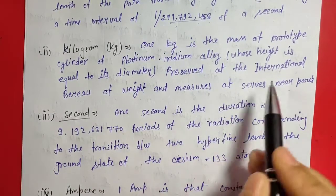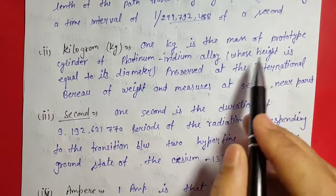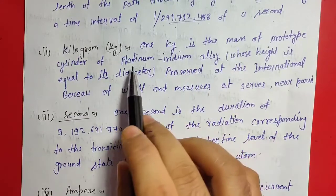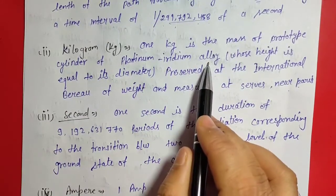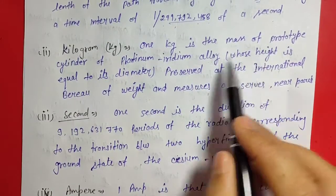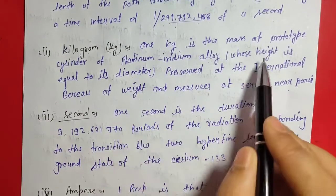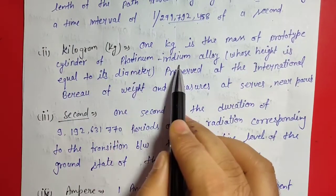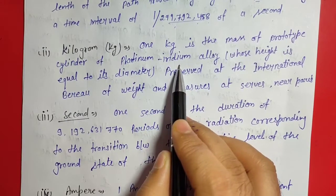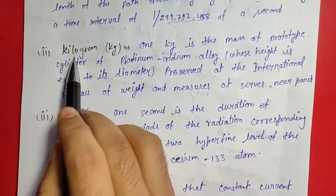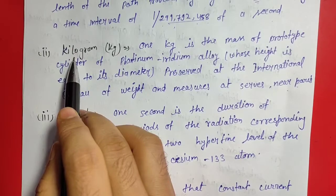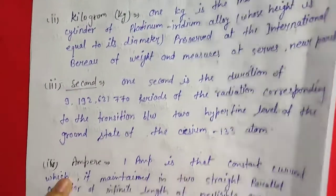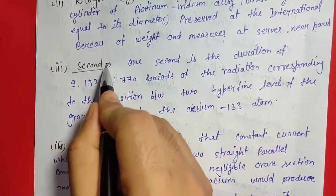This means a prototype cylindrical rod of platinum-iridium alloy is kept in Paris, where the weight and diameter of the prototype cylinder are equal. The mass of that platinum-iridium prototype cylinder is defined as one kilogram.